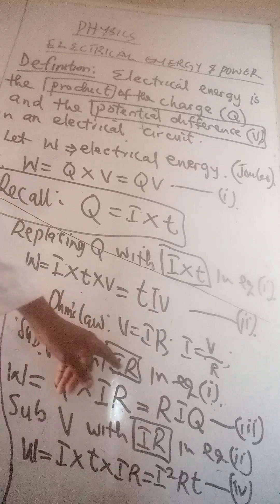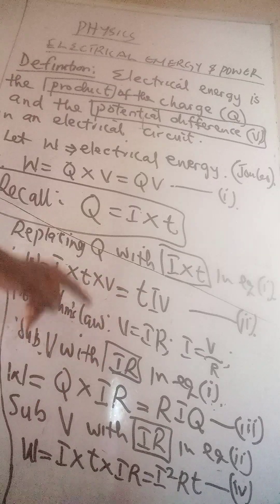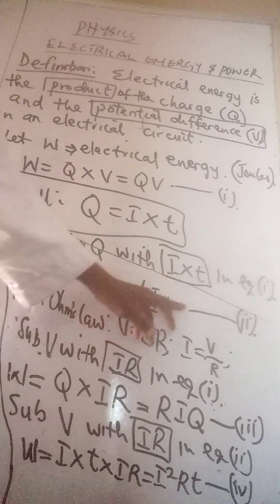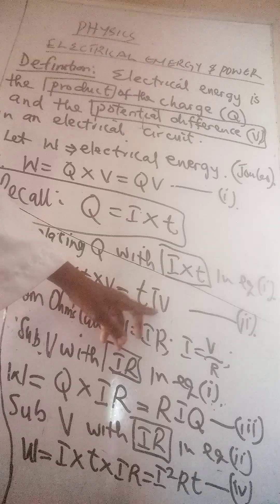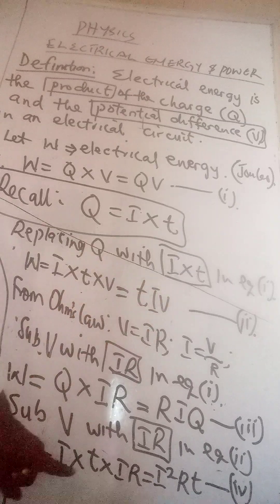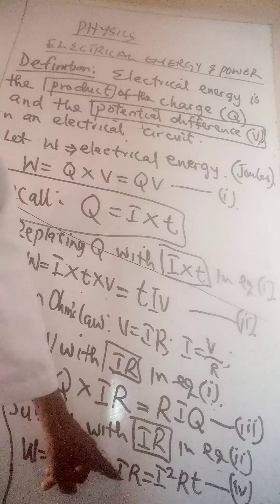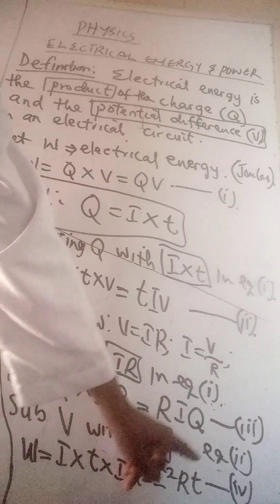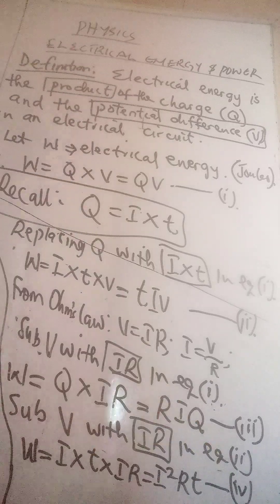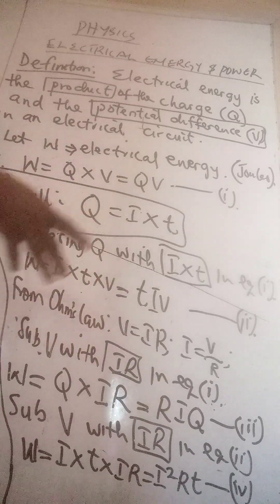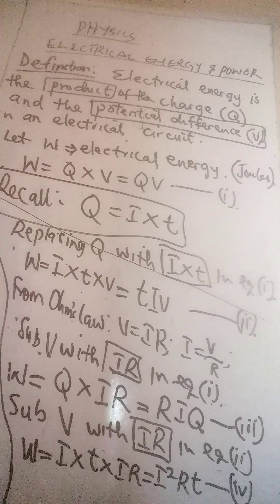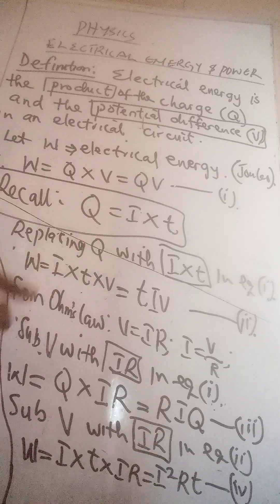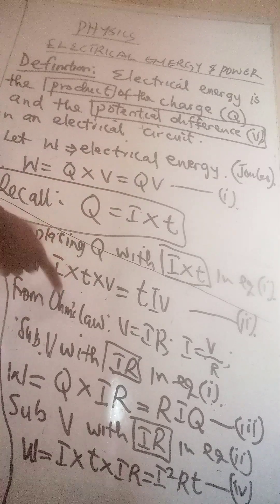Also, using IR to replace V in equation 2 (ITV): instead of writing V, we put IR, giving t times I times IR, which simplifies to I²RT — equation 4. So we have now established four equations for electrical energy using two bases: one from the definition (QV) and the other from Ohm's law.